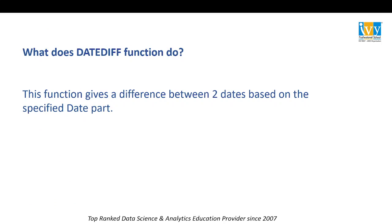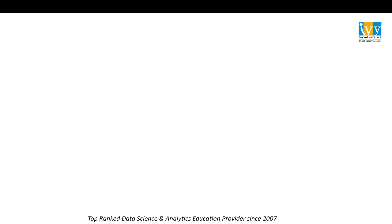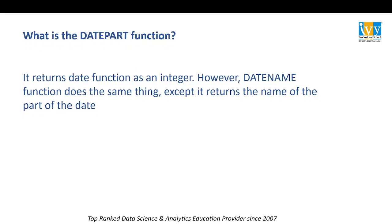What does the DATEDIFF function do? The DATEDIFF function gives the difference between two dates based on the specified date part. What is the DATEPART function? The DATEPART function returns the date part as an integer. However, the DATENAME function does the same thing except it returns the name of that part of the particular date.